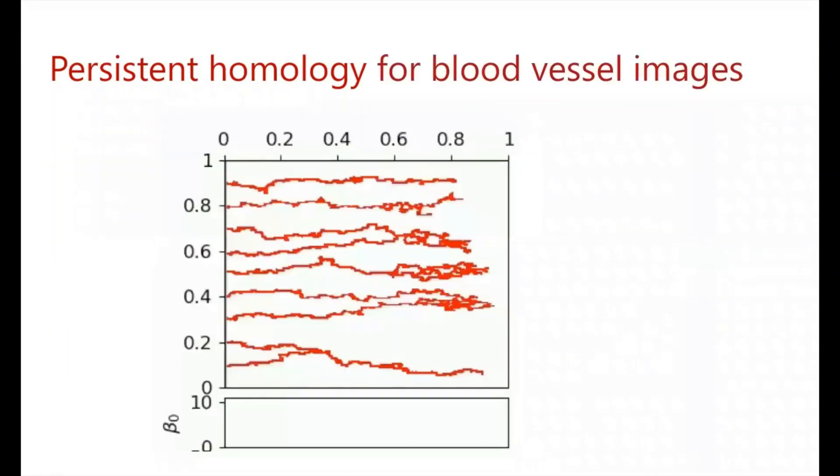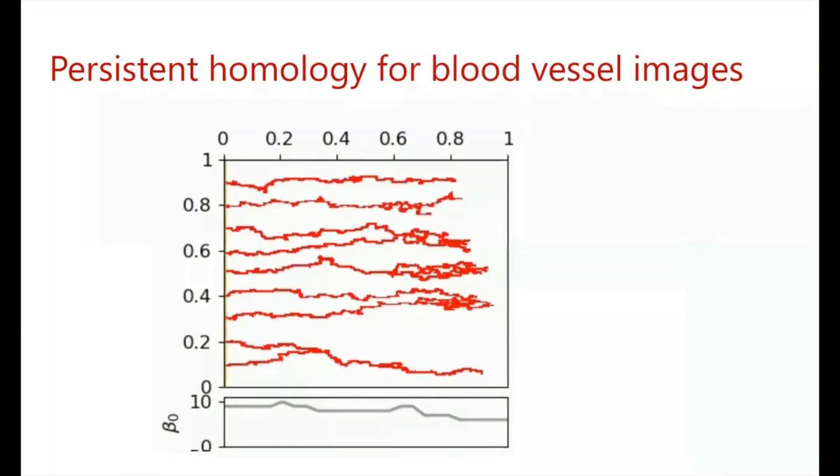Now we can use the same idea on this previous blood vessel image that we saw before, where we can move this line from left to right and track the number of connected components. And what we observe is that the number of connected components decreases as we have two blood vessel segments merged together. And we simply here only move the line from left to right, but we can also move a line from right to left and only consider topological features to the right of our line. And we'll do that with our orange curve here.